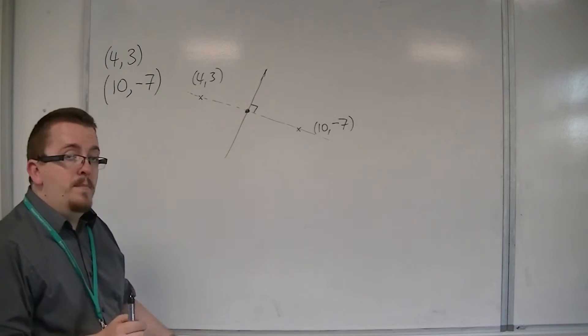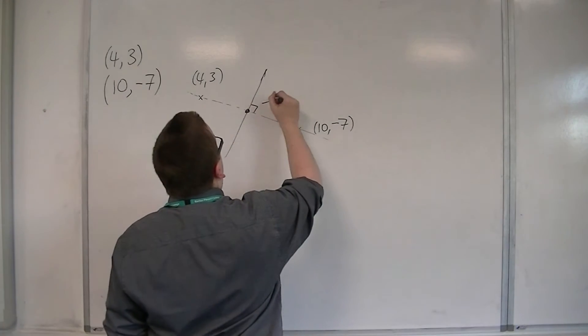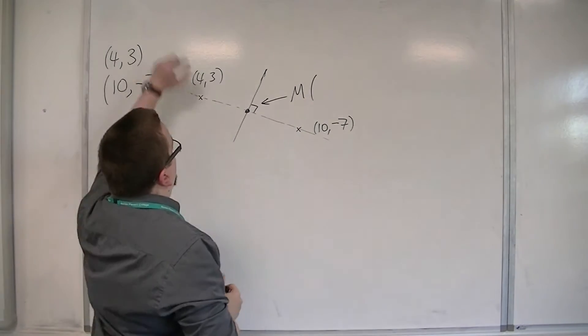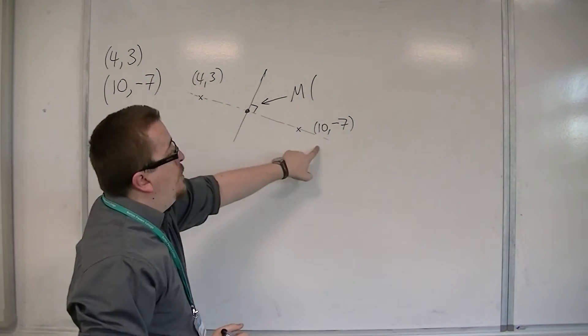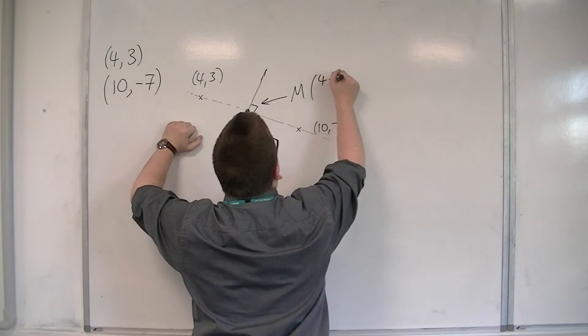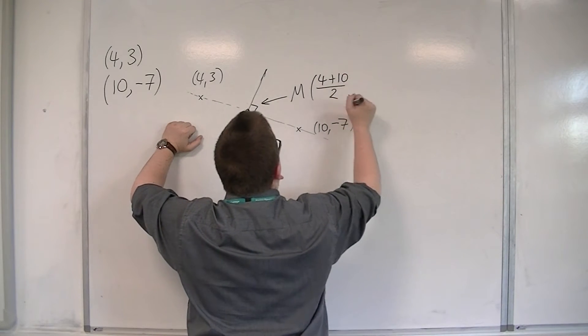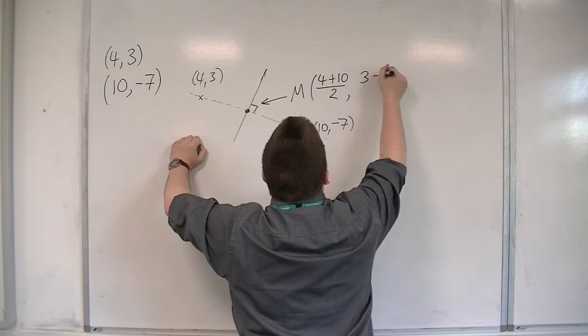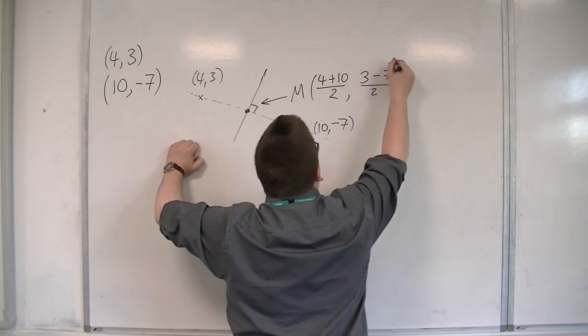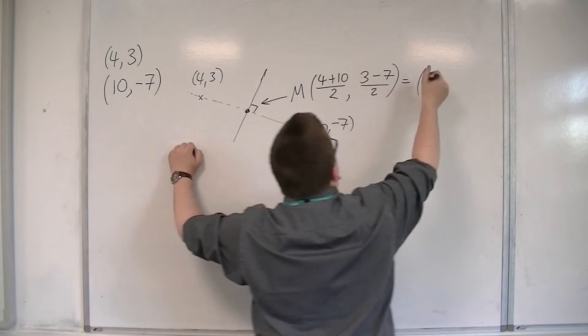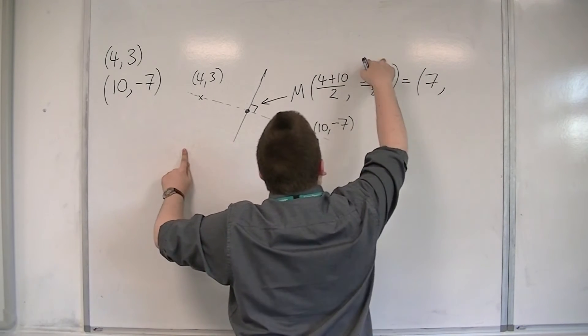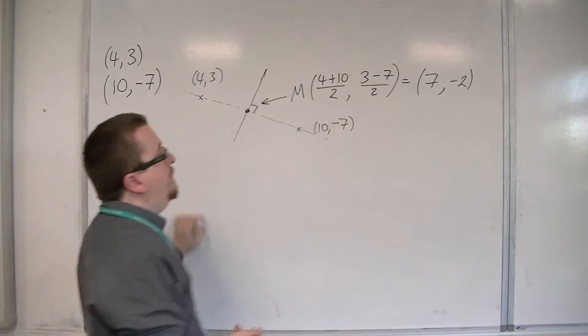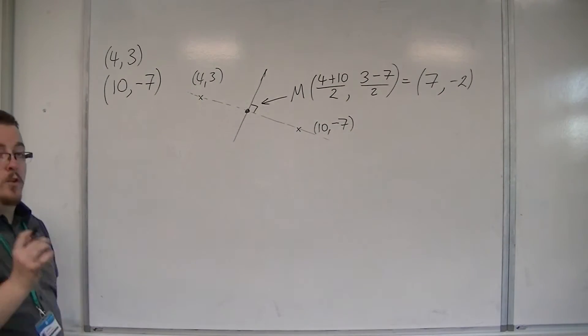We're going to need to find the midpoint. That's the first thing we're going to find. The midpoint, we can find by finding the average of the two x-coordinates. 4 plus 10, then halving. And the average of the y-coordinates, 3 plus minus 7, and then halving. We get 14 over 2 is 7, minus 4 over 2 is minus 2. So 7, minus 2 are the coordinates of the midpoint.